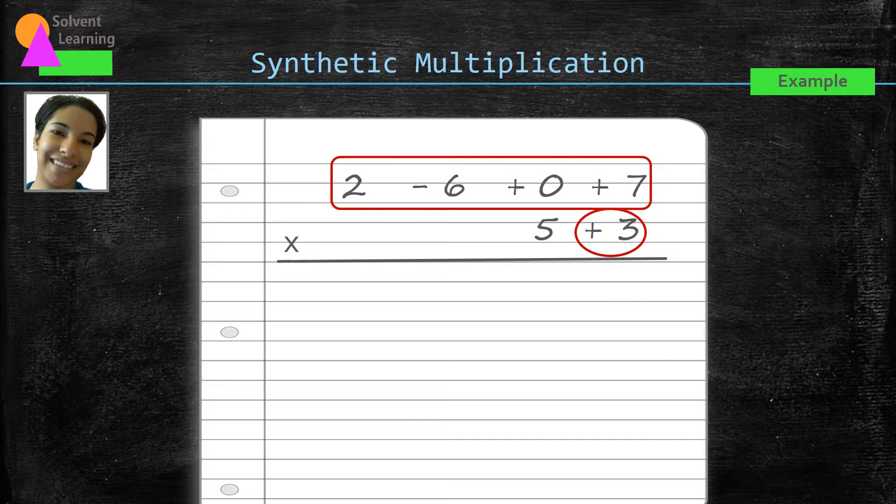So we have three times seven gives us 21 all the way to the right. Then we work our way over to the left. Three times zero gives us zero. Three times negative six, negative 18. And three times two gives us six.